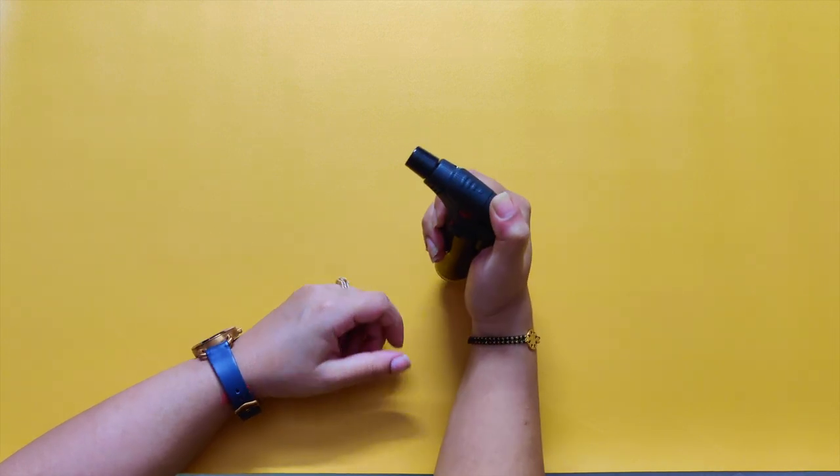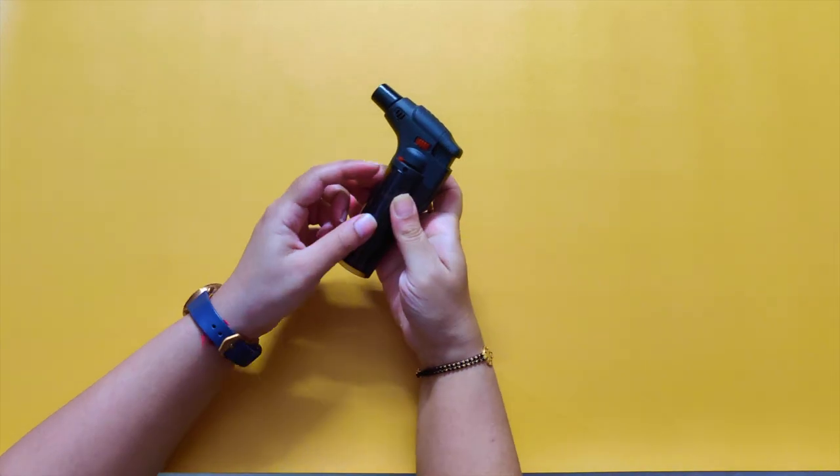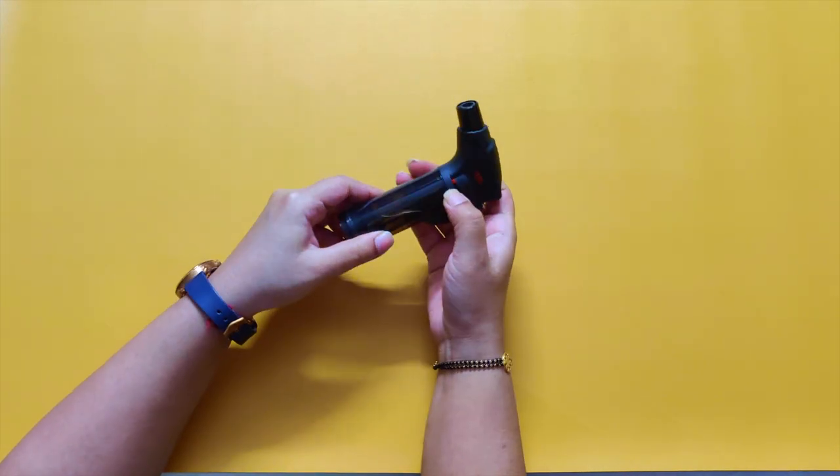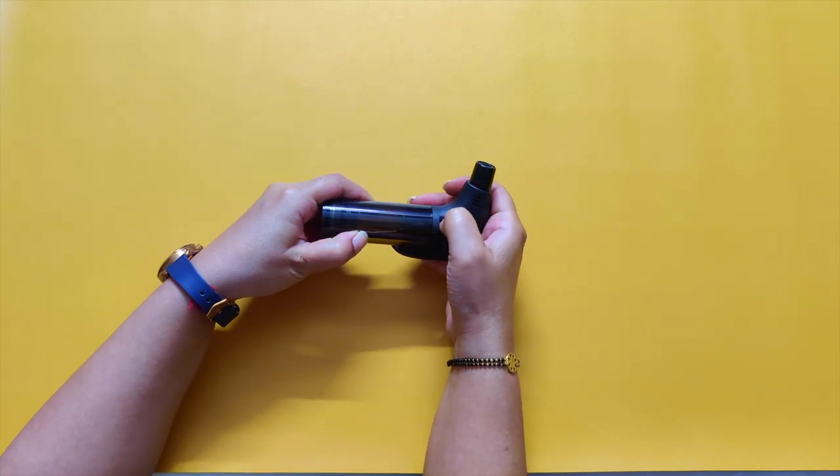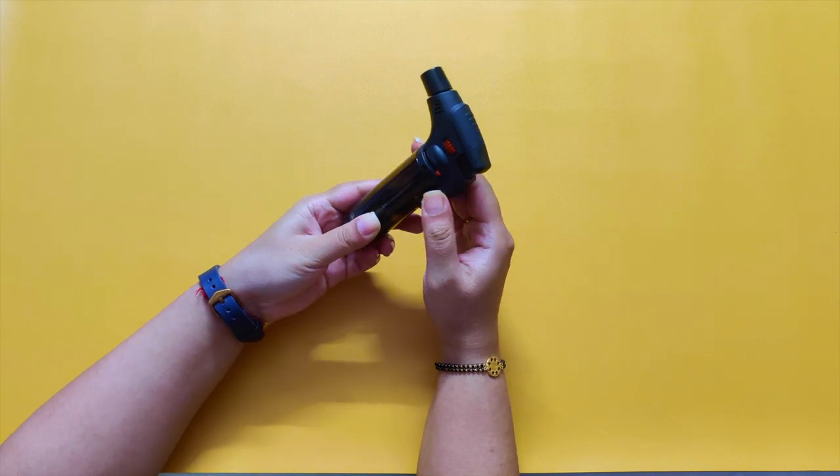Now let's ignite the lighter. As you can see, the flame is low as the lighter is set to the lowest level. Now let's change the level to high. I have set it to max level, now try again.